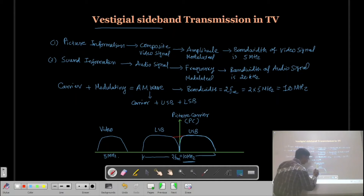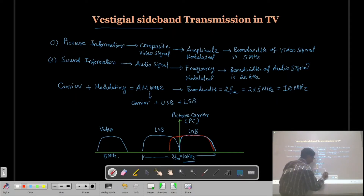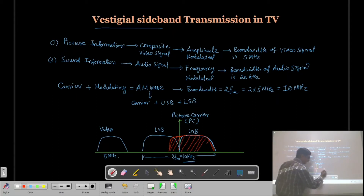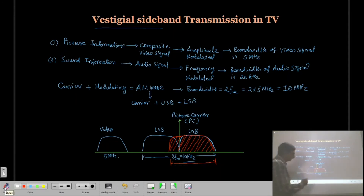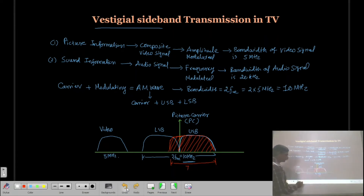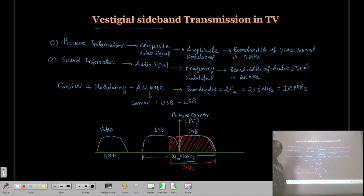Some portion of the lower sideband — the vestigial part — is transmitted along with the upper sideband. As a result, the required bandwidth of the channel is reduced. The new bandwidth of the channel is normally 7 MHz. This is known as vestigial sideband transmission, and it is one of the techniques used with amplitude modulated waves.